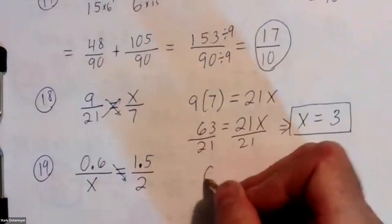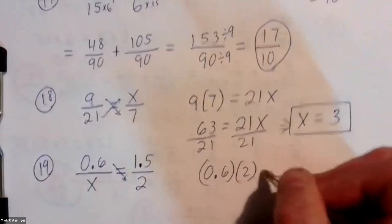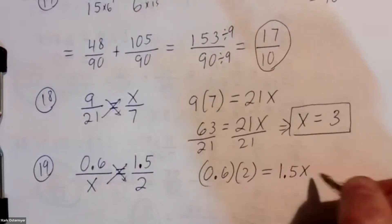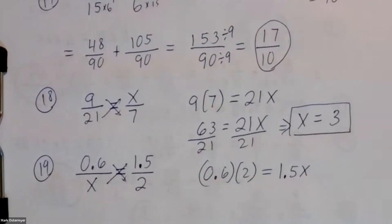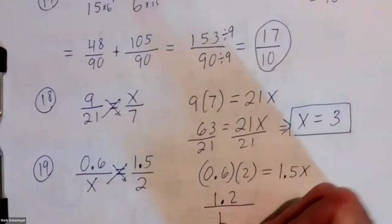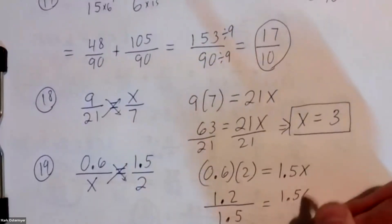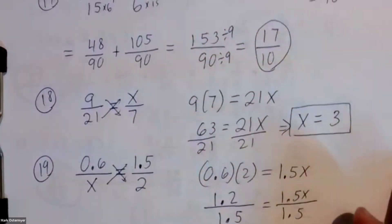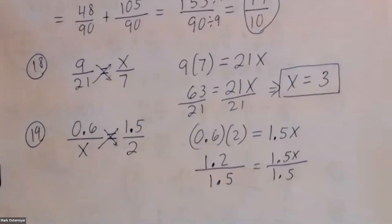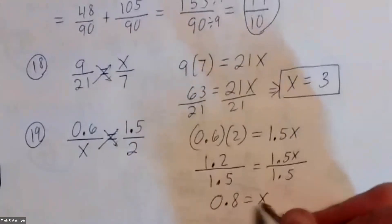Cross multiply: 0.6 times 2 equals 1.5x. How do I solve for x? Get rid of the 1.5 — it's being multiplied by x. By the way, 0.6 times 2 is 1.2. We're going to divide both sides of our equation by 1.5. What's 1.2 divided by 1.5? You get 0.8 — that's what x is equal to.